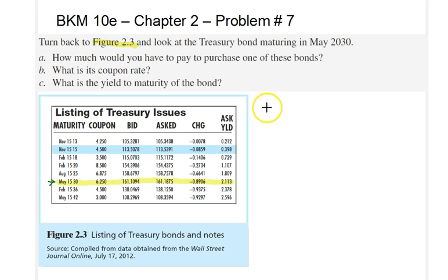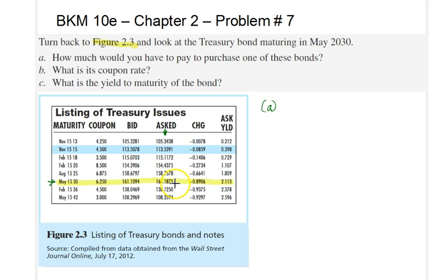Let's start with part A. How much would you have to pay to purchase one of these bonds that mature in May 15, 2030? A potential buyer would look at the ask, and a potential seller would look at the bid, but in this case we want to look at the ask column, and in that column we see the number 161.1875. That's actually the percentage of the par value of the bond that we would have to pay today to purchase this bond.